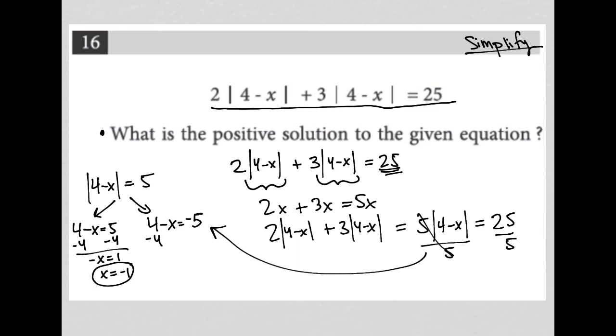And then here, same thing. Isolate my x. So subtract 4, subtract 4. I have negative x equals negative 9. Therefore, x equals positive 9.